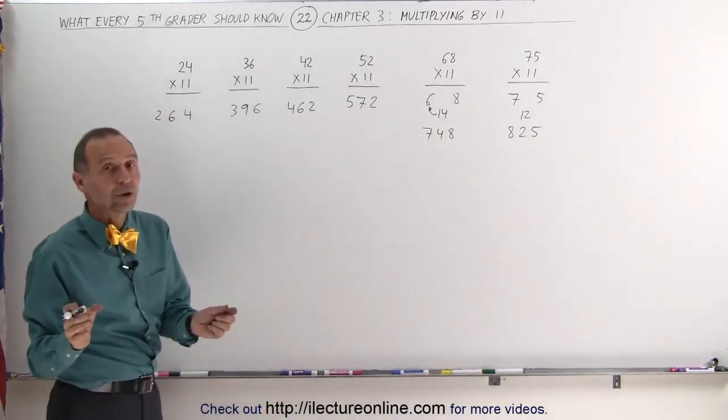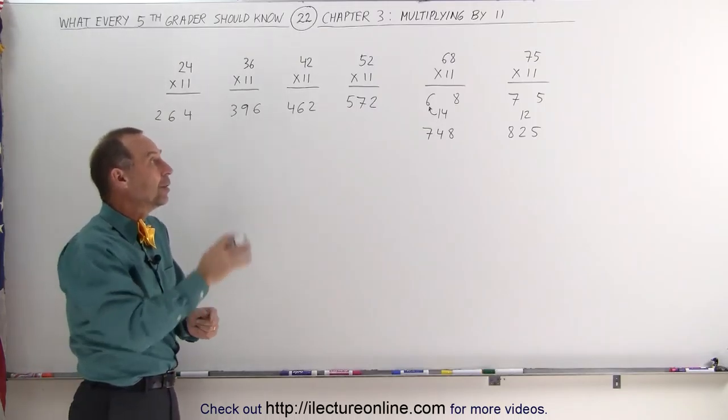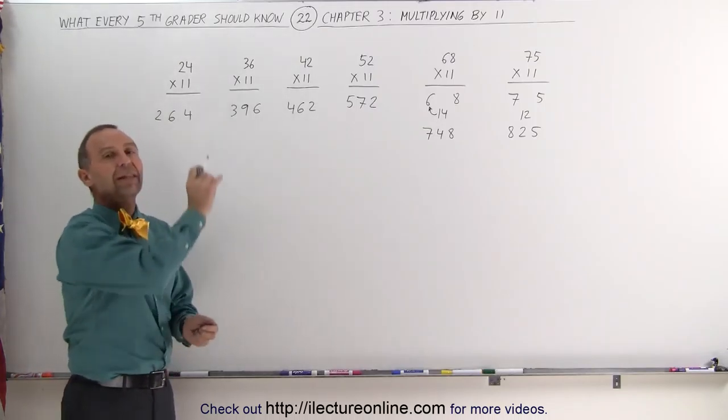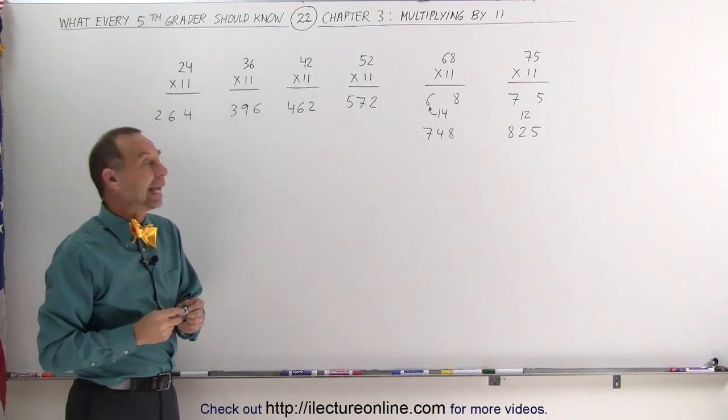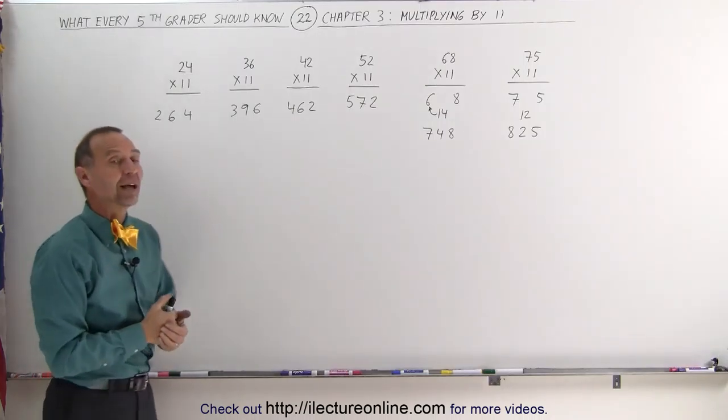So even when the 2 numbers add up to something that is bigger than 9, you can still do it, but you just have to add one more to the first number, and that's how you multiply by 11.